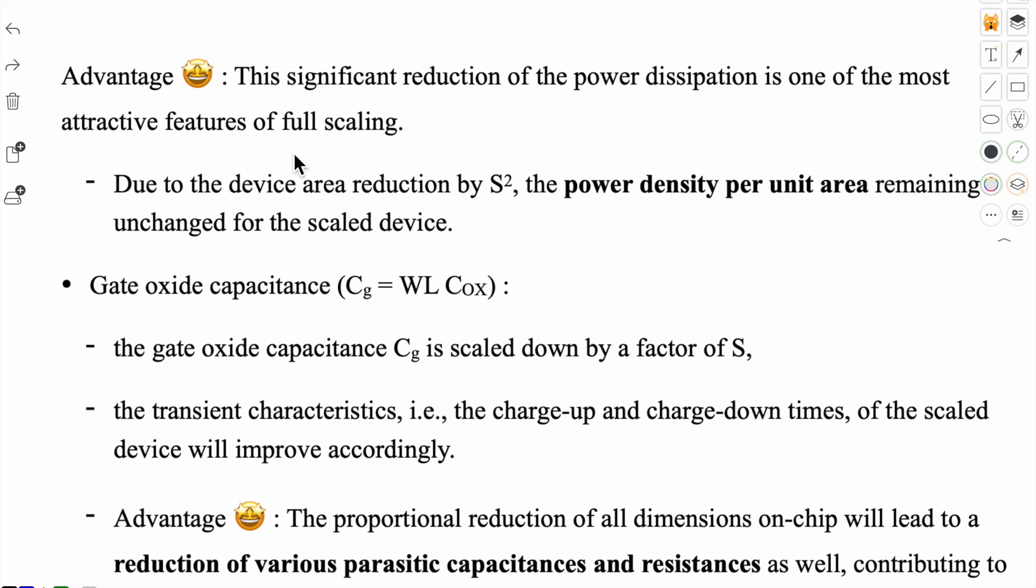What are the other advantages? We have seen power dissipation has significant reduction. And due to device area reduction by S square, which we explained in previous video that device area reduces S square times, the power density per unit area will remain unchanged.